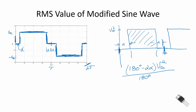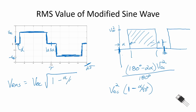We obtain an equation for the voltage squared: VDC squared times (1 minus alpha over 90 degrees). Taking the square root, the RMS value for a modified sine wave is VDC times the square root of (1 minus alpha divided by 90 degrees). If we are in radians, this equals VDC times the square root of (1 minus alpha over pi divided by 2). Either form works depending on whether alpha is in degrees or radians.